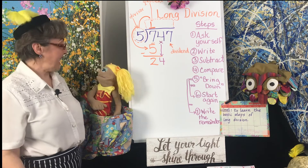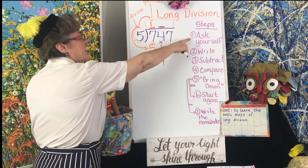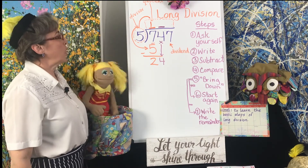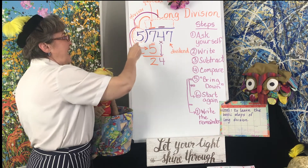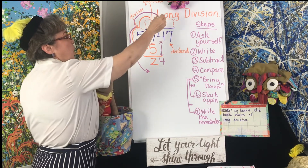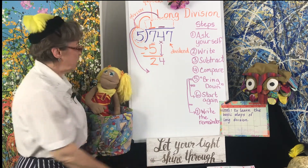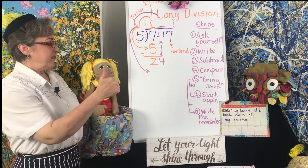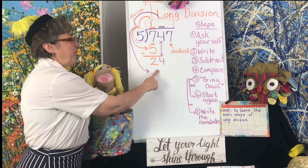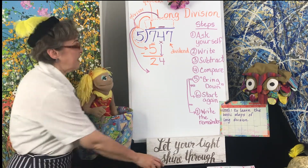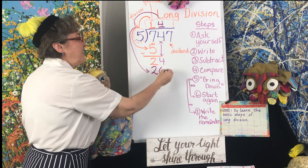And now we're going to start again. We're going to move over to the next place, make a line, and we're going to ask ourselves the same question: what number, when multiplied by the divisor, is less than or equal to 24? Do you know your 5 times tables? Yes, I do. Let's do it: 5, 10, 15, 20 — 25? Stop. 25 would be 5 times 5, that would be too big. So it must be 4. Let's try 4. 4 times 5 is 20, so we're going to put the 20 here.